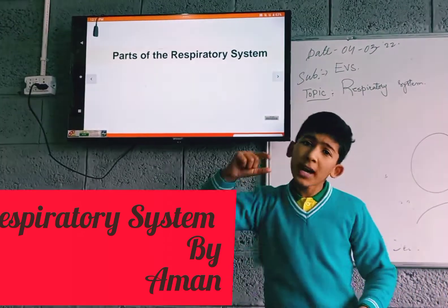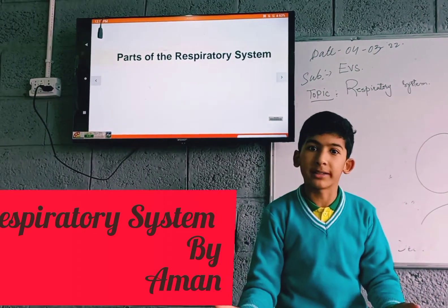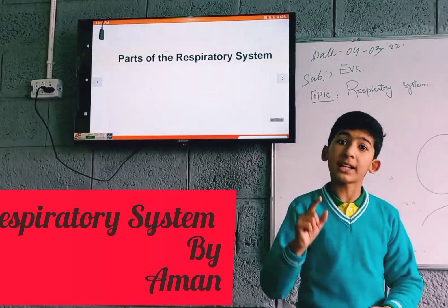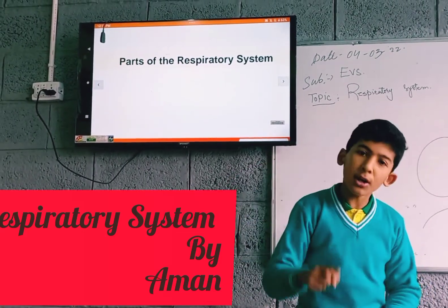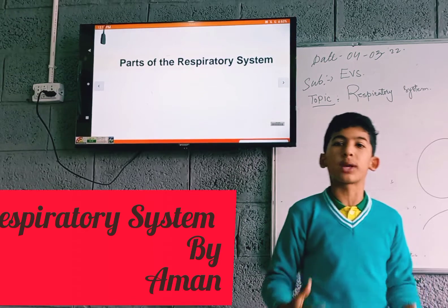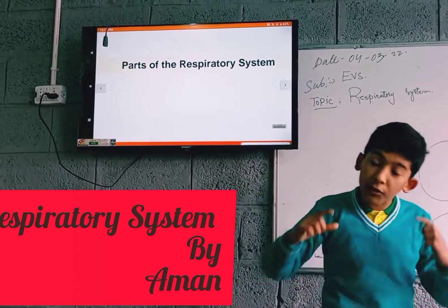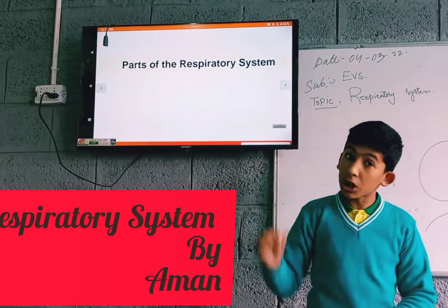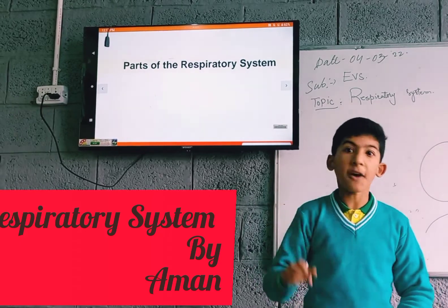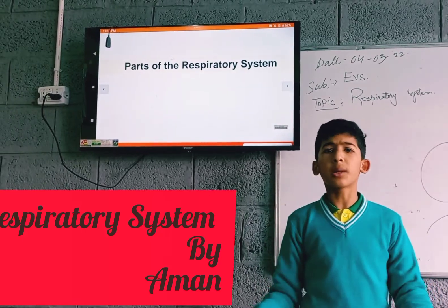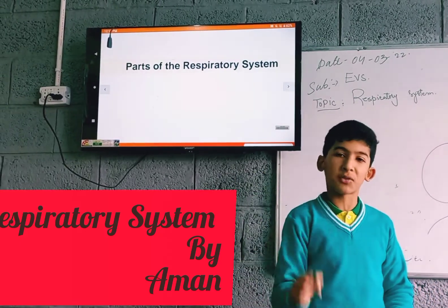But why is it called the respiratory system and not a respiratory organ? Because many organs work together and perform a particular function. For example, nostrils, nose, trachea, pharynx — all are parts of the respiratory system and they each have a particular function.